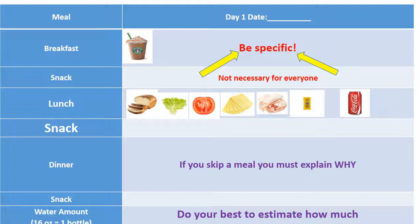What you're seeing on your screen is a sample template that you can use to record your food. You're going to be using some form of a template — one exactly like this would be fine, however you do not have to use this exact template. You would need to have the date. Notice at the top it says Day 1, and then along the left-hand side I have breakfast, snack, lunch, snack, dinner, snack, and water amount. For each meal you'll be recording all of that information.